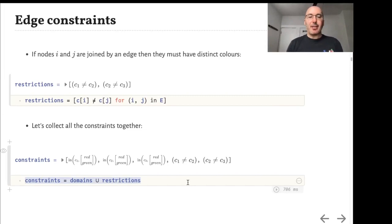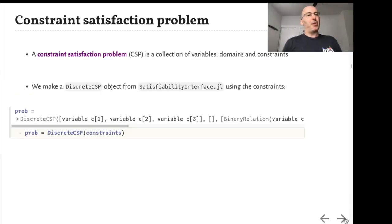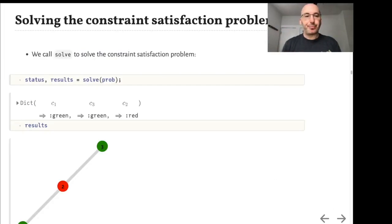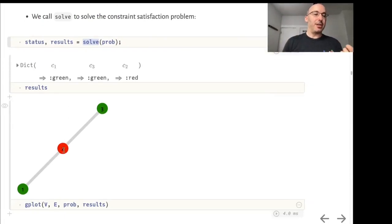This gives us a constraint satisfaction problem, which is a collection of variables with domains they live in and constraints that join them together, also called a constraint network. Now we make a discrete CSP object from satisfiability interface.jl. This package will parse the symbolic constraints into domain definitions and actual constraints. We can just call solve on this problem object and it returns the mapping of variables to colors. Here is the result plotted on a graph. We see that vertex 2 has a different color from vertices 1 and 3.